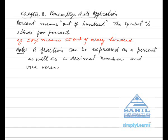Note: A fraction can be expressed as a percent as well as a decimal number and vice versa. For example, 3 by 4 is equal to 75% is equal to 0.75, and 62.5% is equal to 5 by 8 is equal to 0.625.